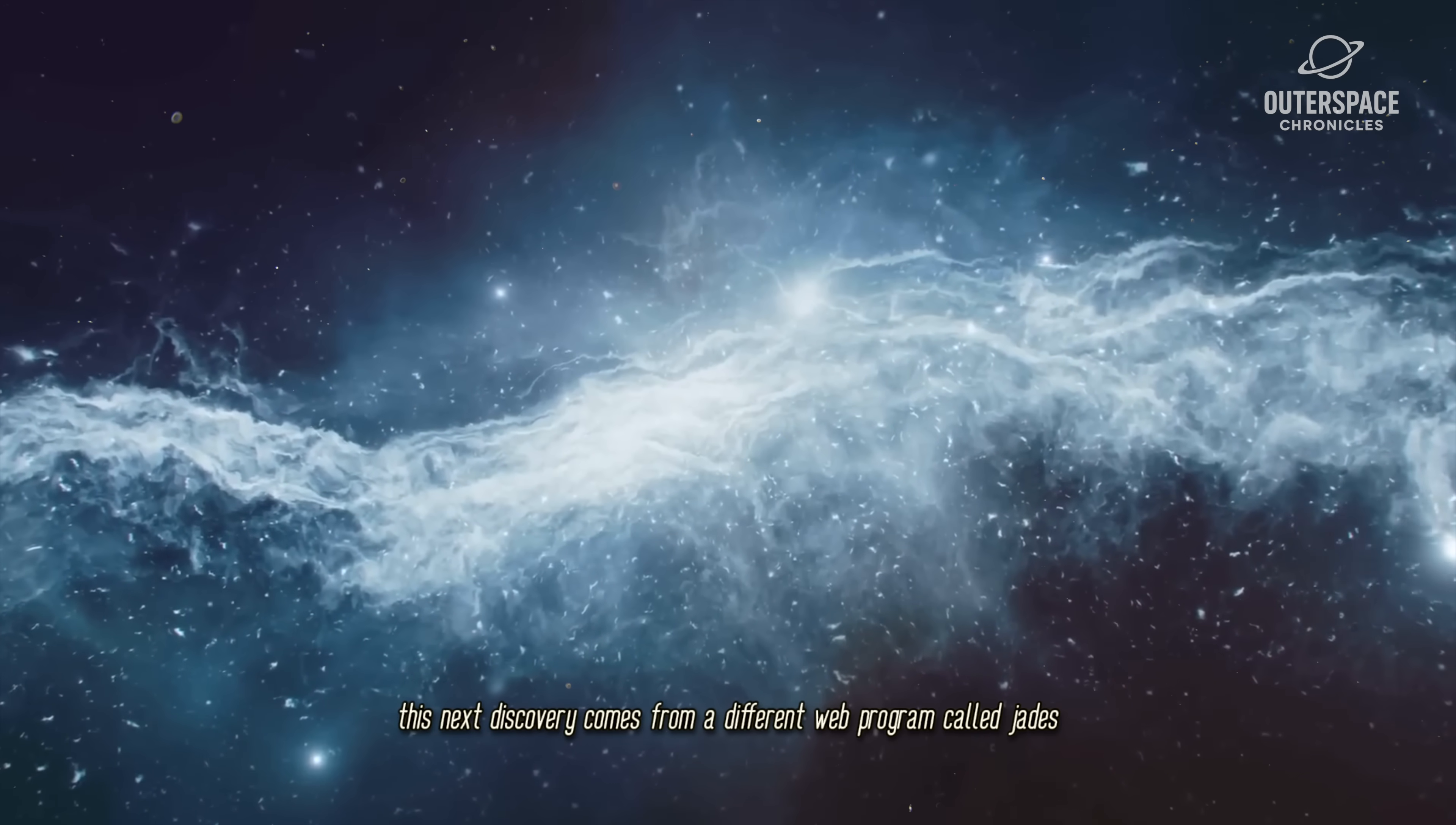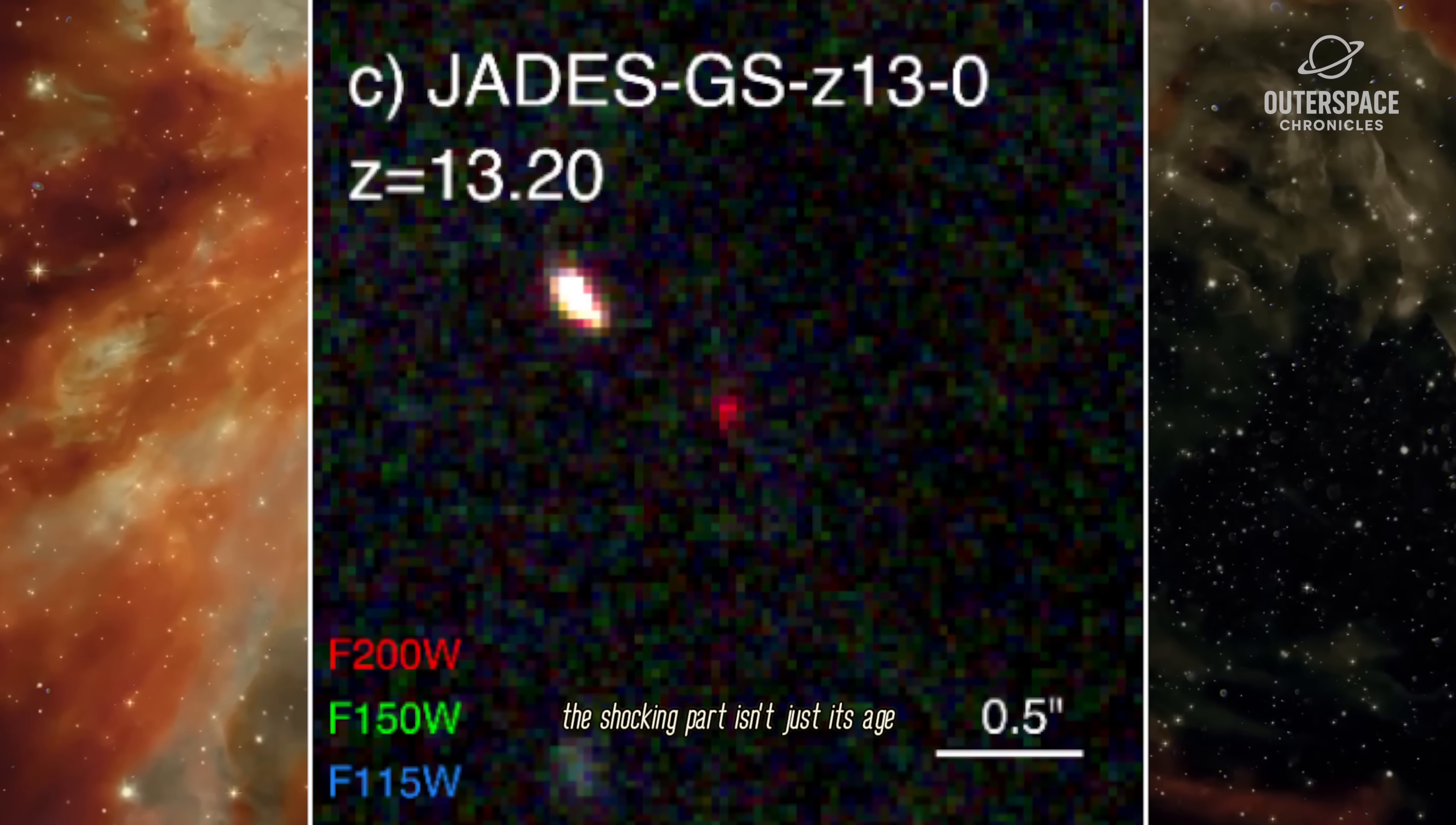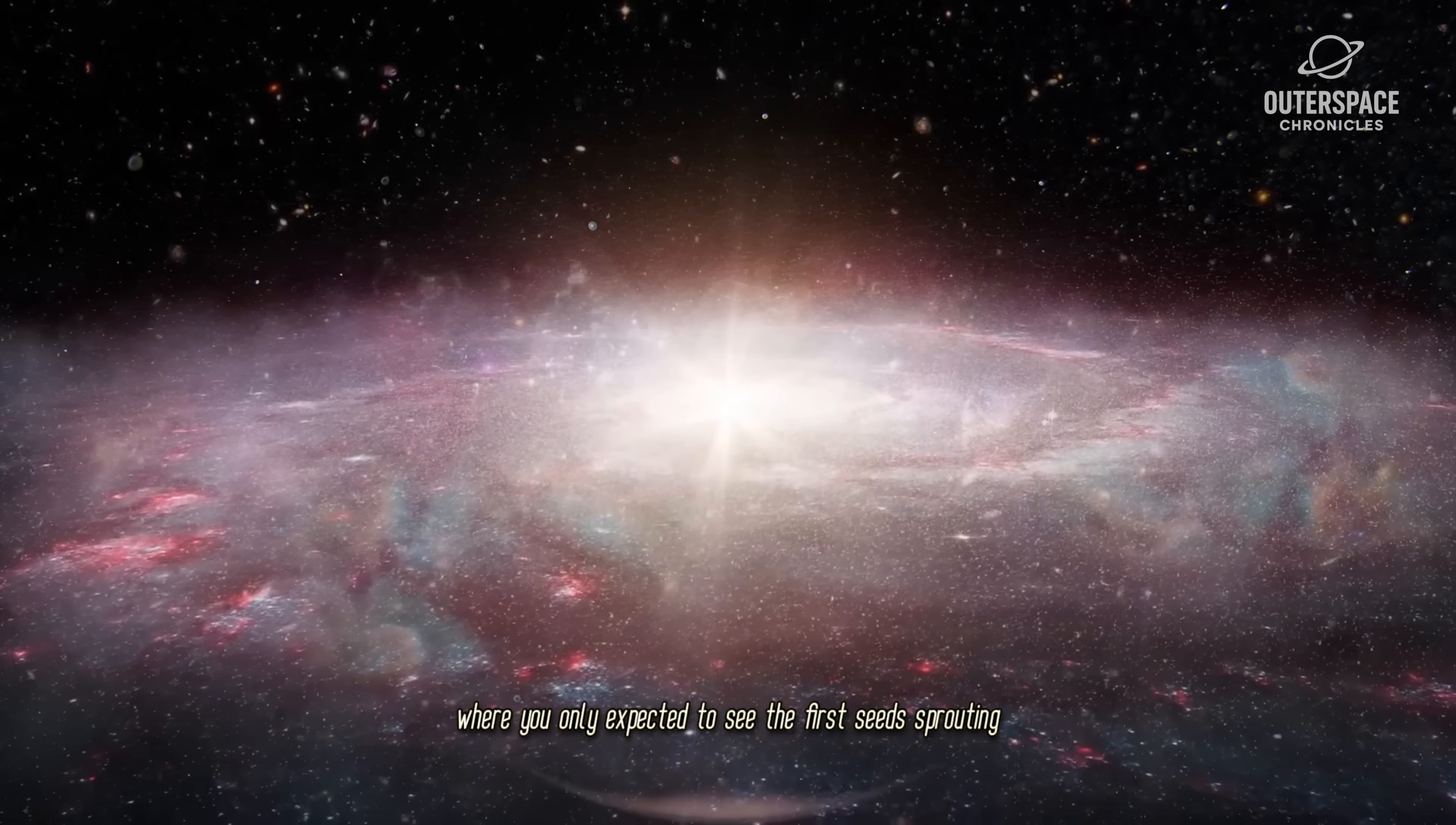Now, this next discovery comes from a different Webb program, called JADES, but it's a perfect example of how Webb is turning our astrophysics on its head. They found a galaxy, JADES-GS-Z13-1, that existed just 330 million years after the Big Bang. The shocking part isn't just its age, it's that it's shining brightly with a hydrogen signature that should have been completely smothered by that cosmic fog. As one team member put it, this result was totally unexpected and has caught astronomers by surprise.